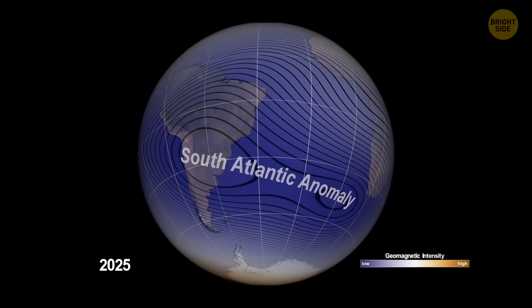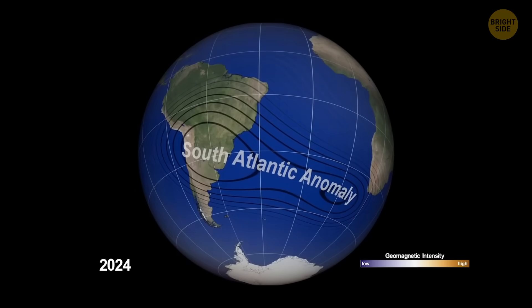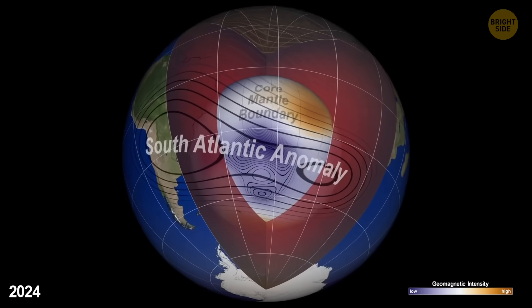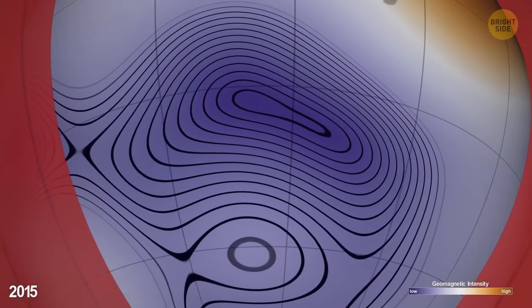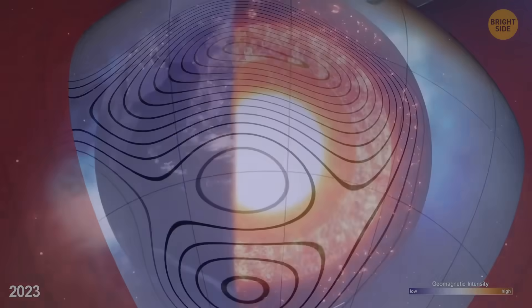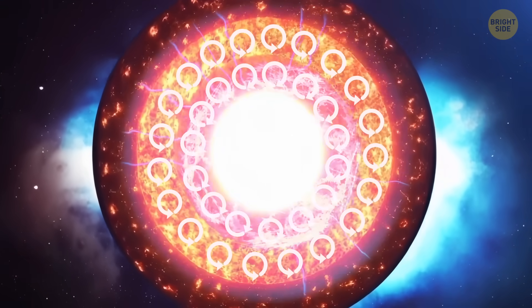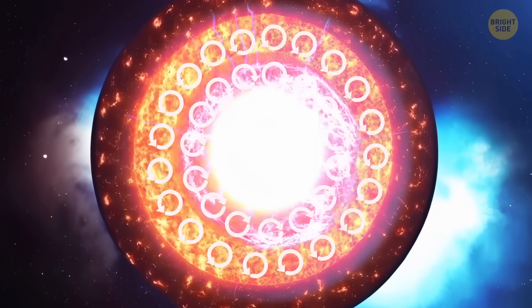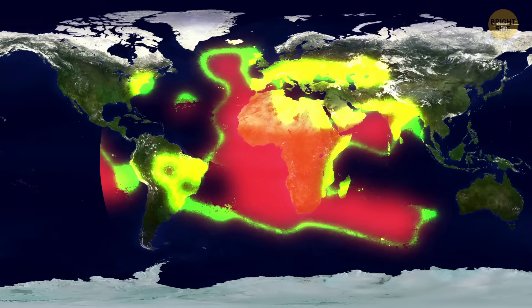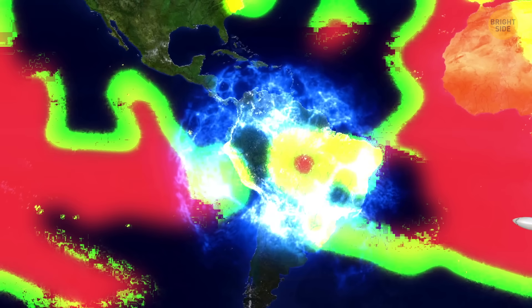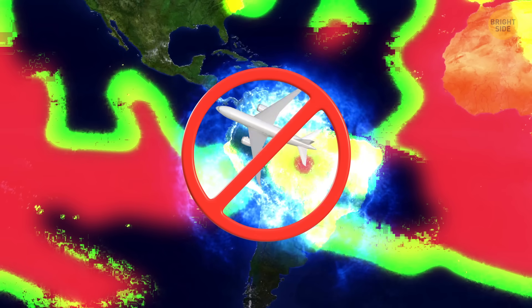You see, the South Atlantic anomaly is connected to Earth's molten insides. Deep beneath the surface, the planet's core and mantle are constantly moving, flowing, and clashing. The outer core is a swirling ocean of liquid metal, and the mantle above is hot, solid rock. Under Africa, there's nothing to cool things down. The mantle is hotter than usual, which creates certain instability in the magnetic field above.